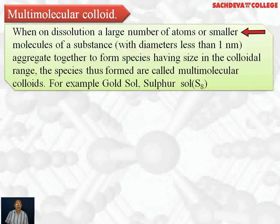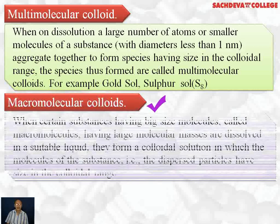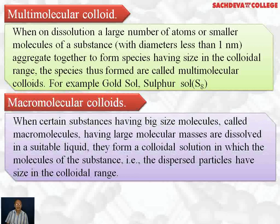Next, we take up multi-molecular colloids. When a large number of atoms or small molecules of a substance — with diameters less than 1 nanometer — aggregate together to form species having size in the colloidal range, the species thus formed are called multi-molecular colloids. For example, gold sol and sulfur sol.